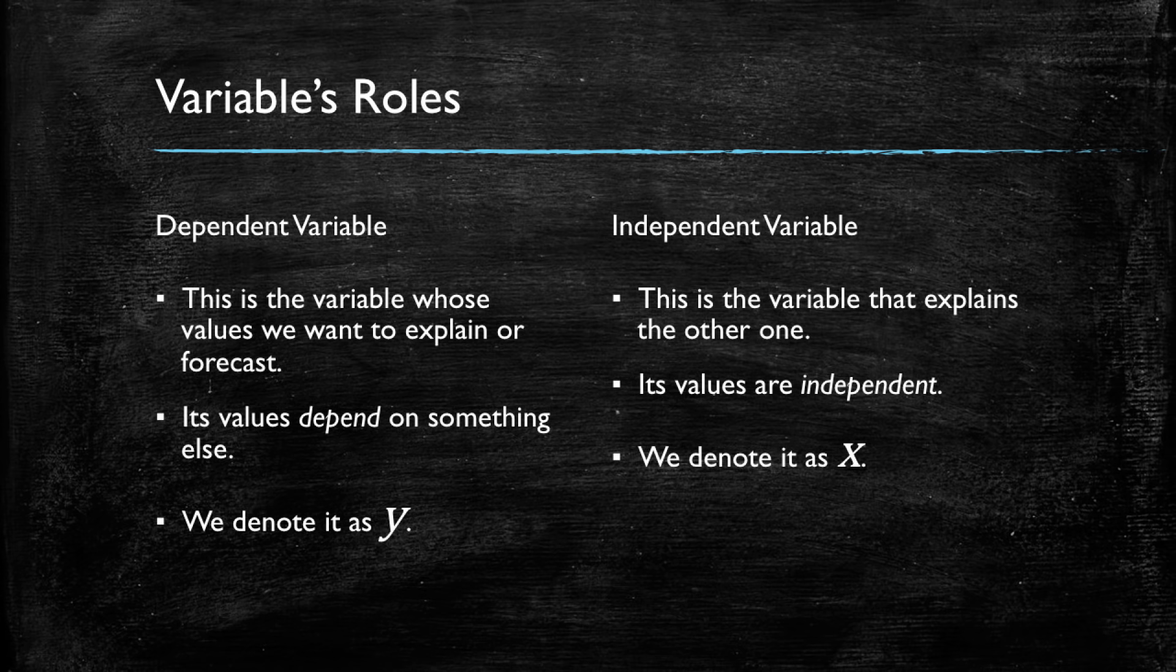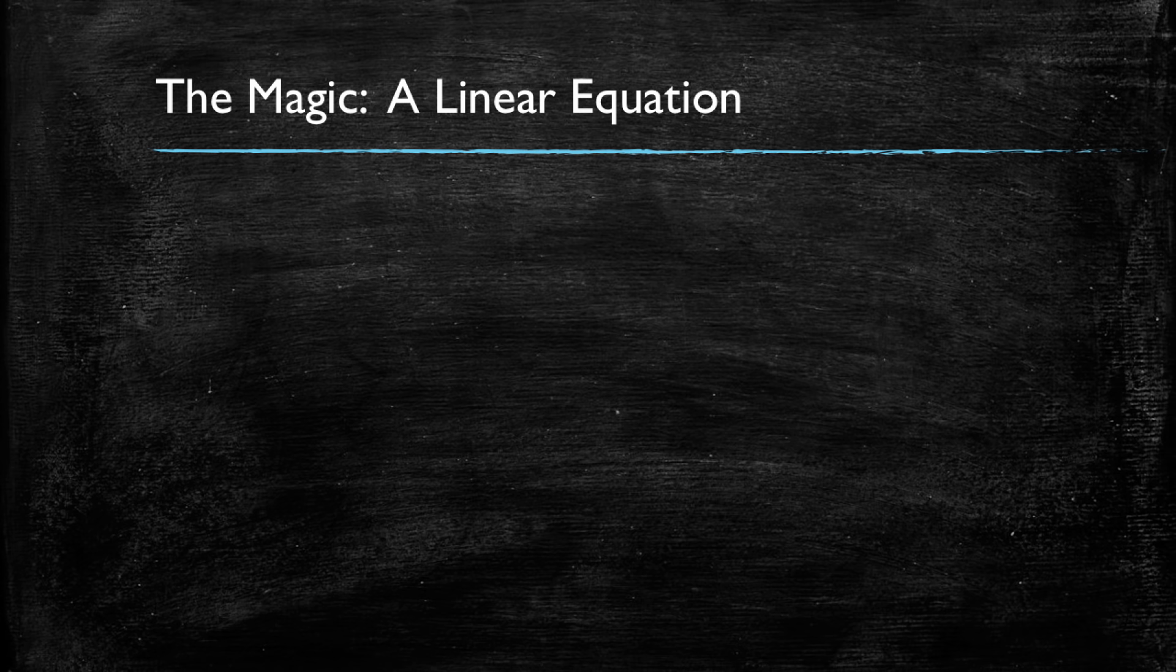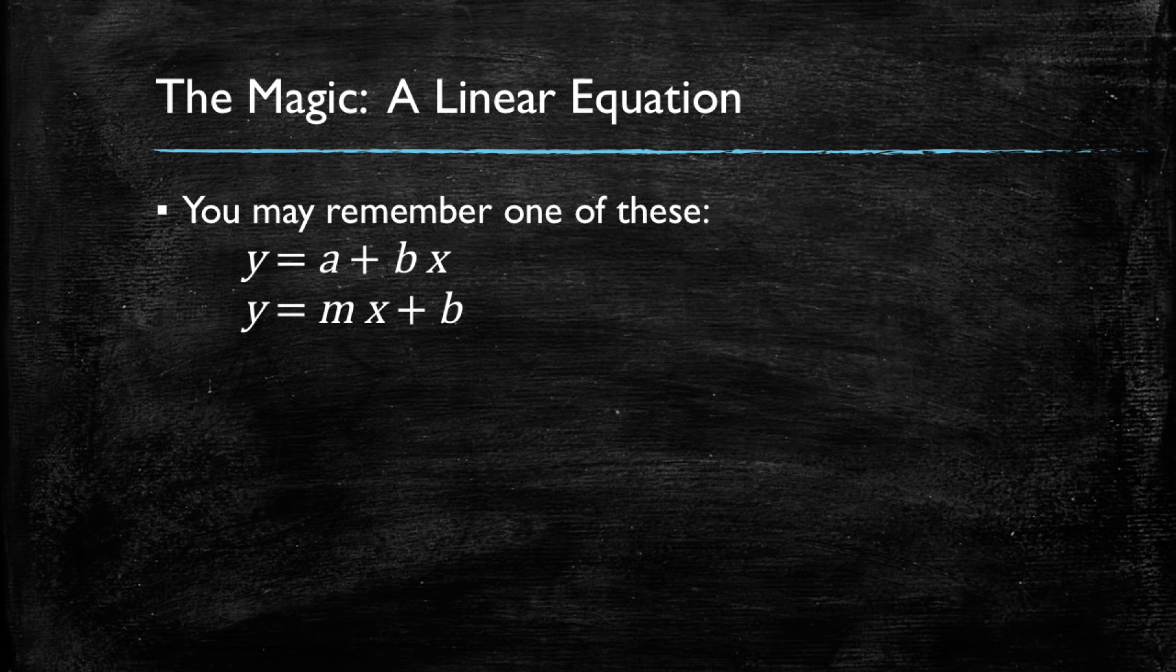When we use simple linear regression models, we call them linear because the magic is that we're using a linear equation. From your high school years, you might remember one of these, where y is a function of x, and there's a term that is added to the function, another one that multiplies the x. In the stats world, we like Greek letters, and we're going to be using a slightly different notation.